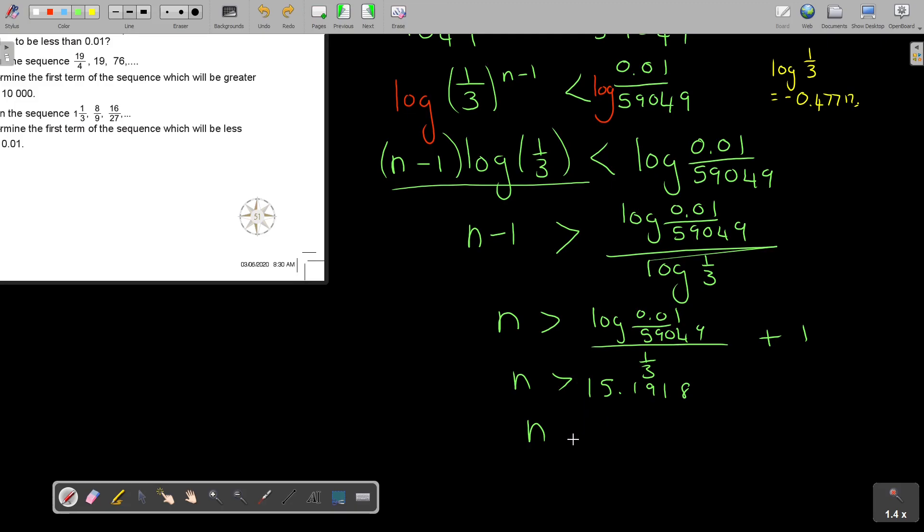I think it's better that you do it like this. So I'm going to say, therefore, the 16th term is the first term to be less than 0.01. And that's how you do it. So always, always be careful. Make sure that you see if the sign must swap or not swap. If you divide by a positive, sign stays the same. As soon as you divide by a negative, linear inequalities, the sign must swap around.